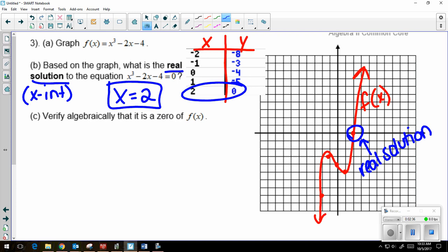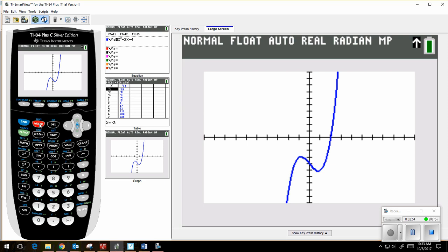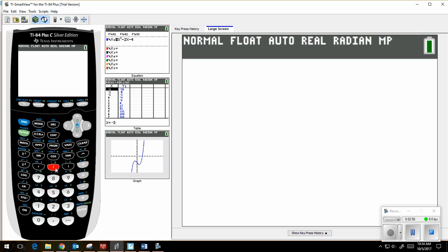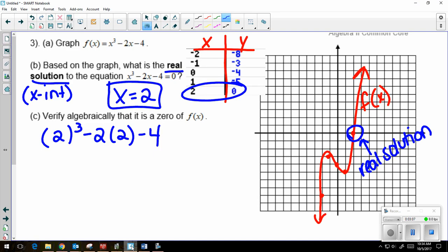So part c says verify algebraically that it is a 0 of f of x. So first, I'm going to use the factor or remainder theorem, and I'm going to substitute. So I'm going to do 2 cubed minus 2 times 2 minus 4 on my calculator. So, second quit to get back out. 2 to the third minus 2 times 2 minus 4. It equals 0. So I know that it works.